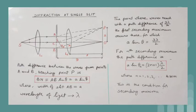Hence, in general, for the nth secondary maximum the condition is A sin theta is equal to (2n + 1) times lambda by 2, where n = 1, 2, 3, and so on.